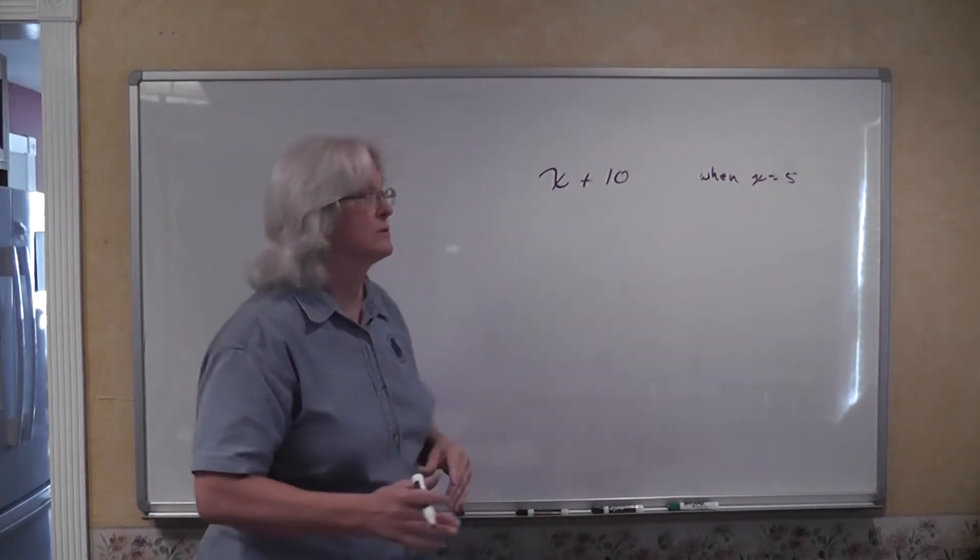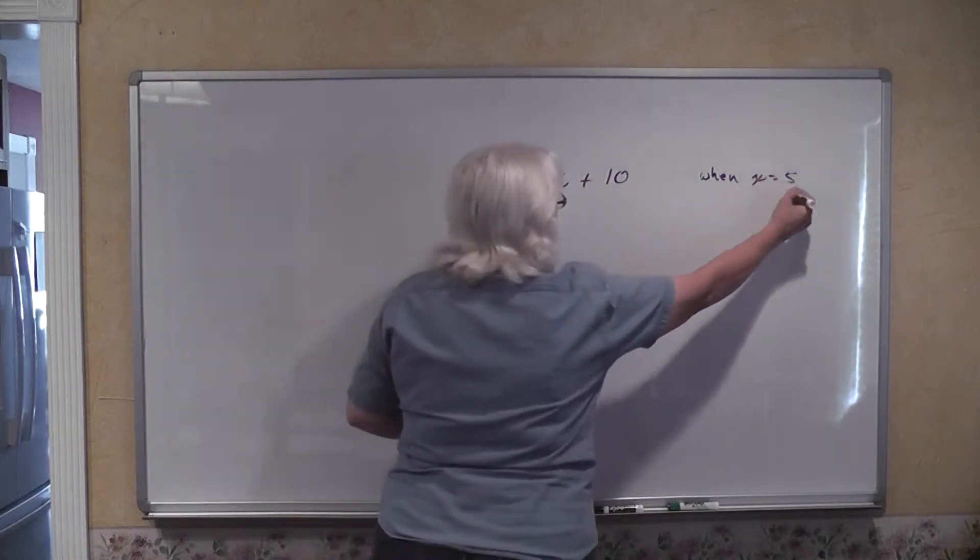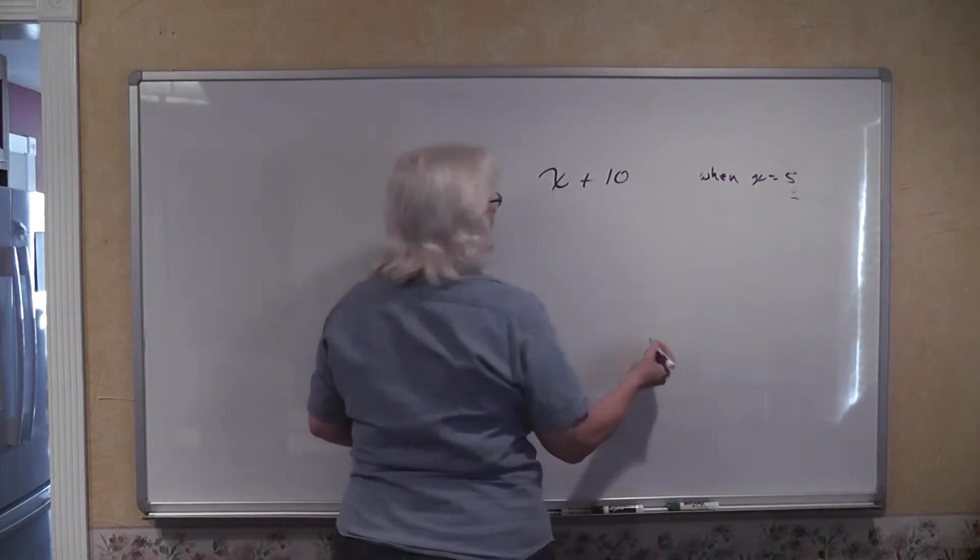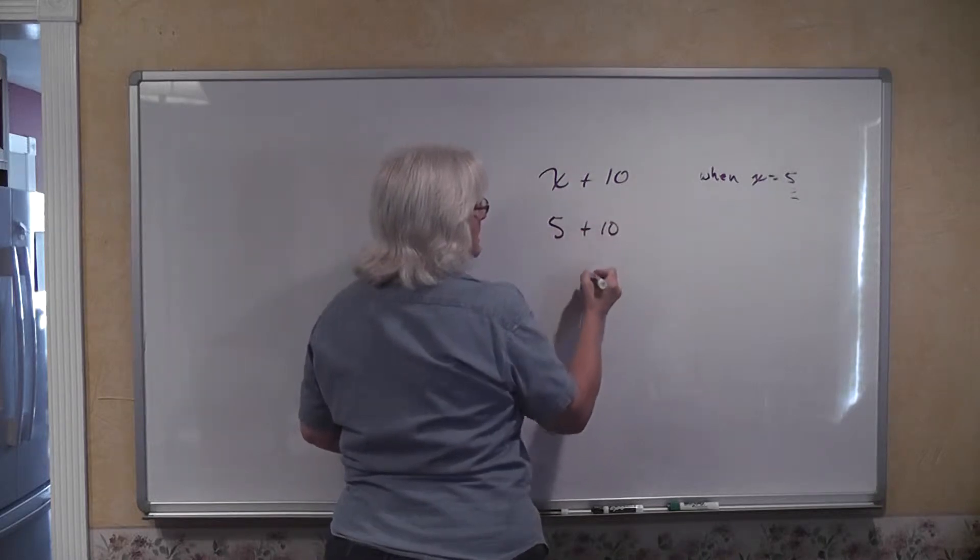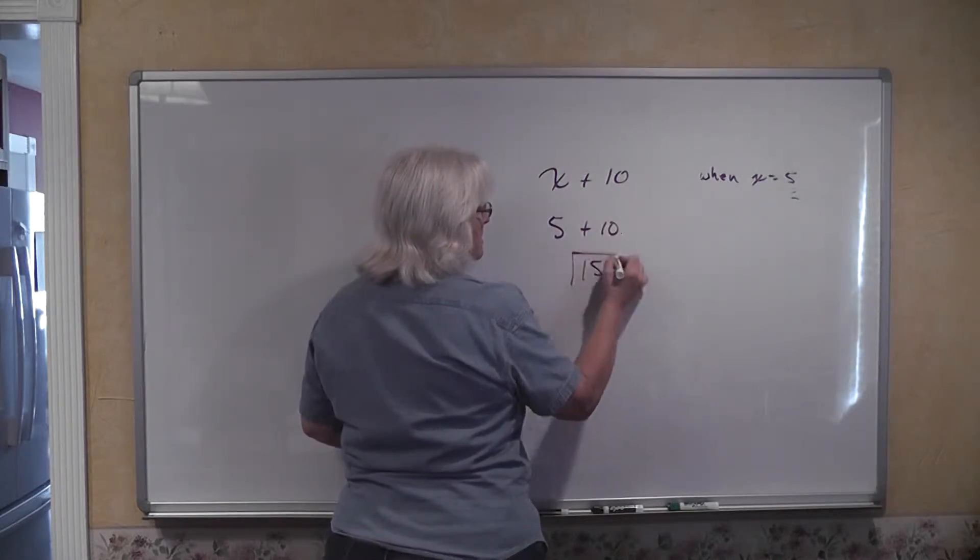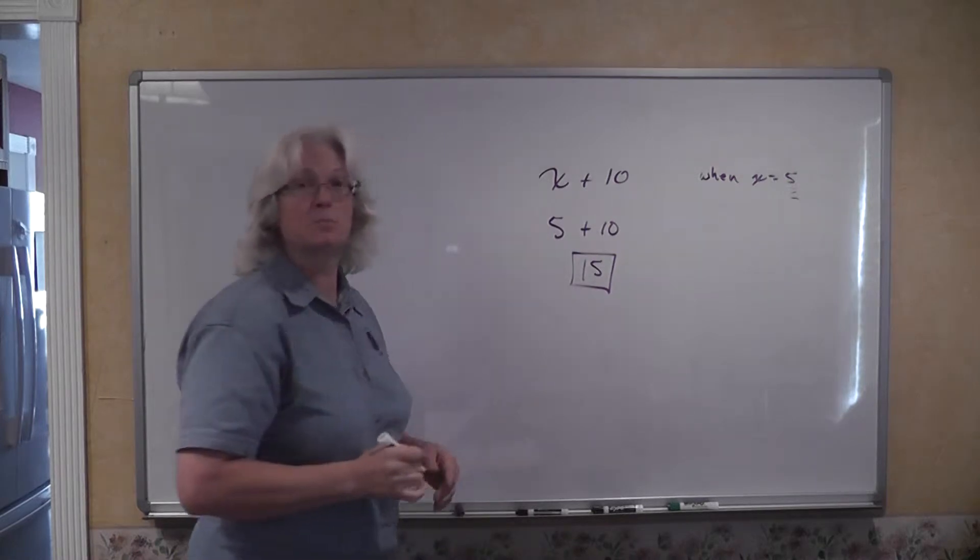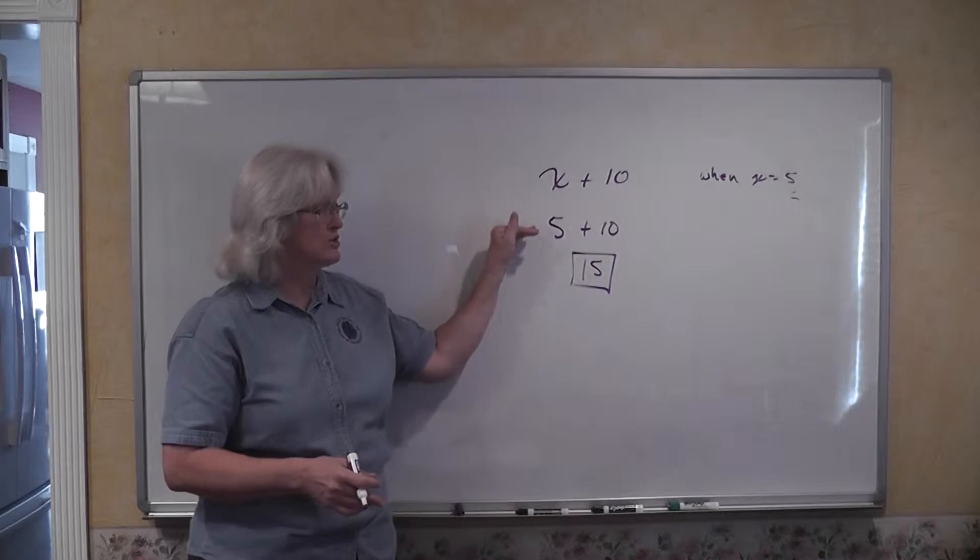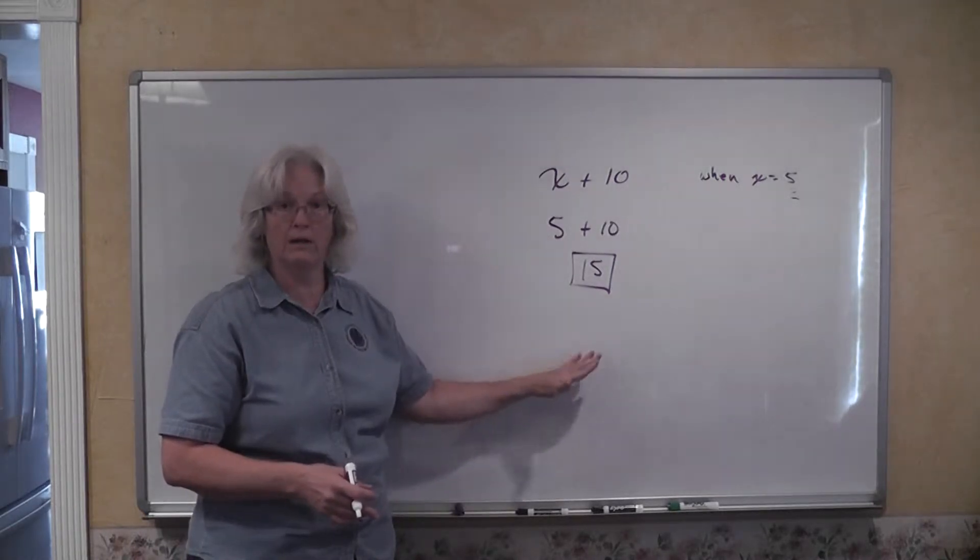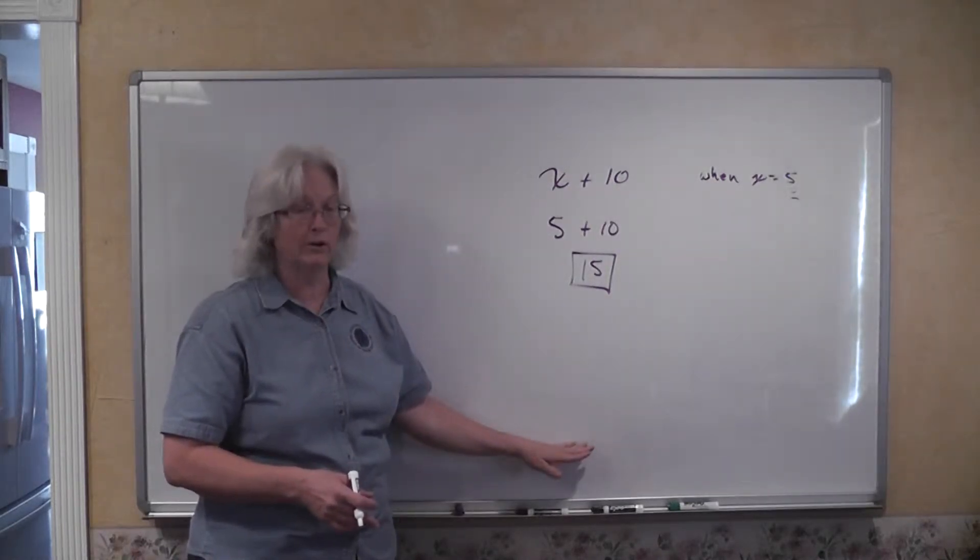So we're going to substitute. That means we take this assigned value for x and we replace x with the 5. So we have 5 plus 10 and the value for that expression becomes 15. And you write the problem and you show your steps line upon line.